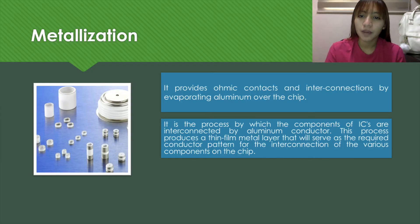Next terminology is metallization. Metallization provides ohmic contacts and interconnections by evaporating aluminum over the chip. It is the process by which the components of ICs are interconnected by aluminum conductor. This process produces a thin film metal layer that will serve as the required conductor pattern for the interconnection of the various components on the chip.